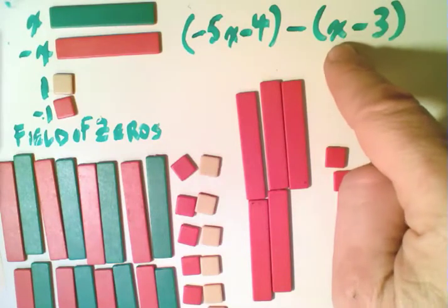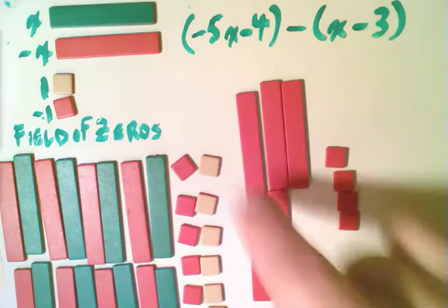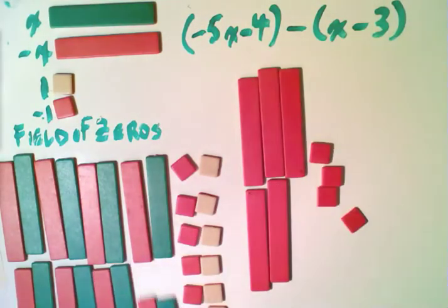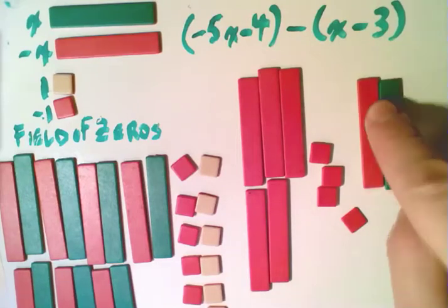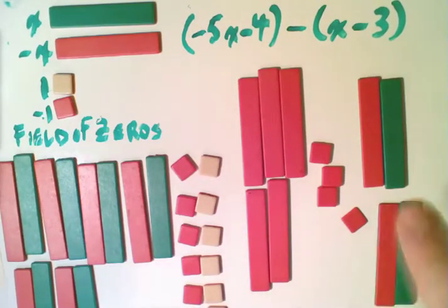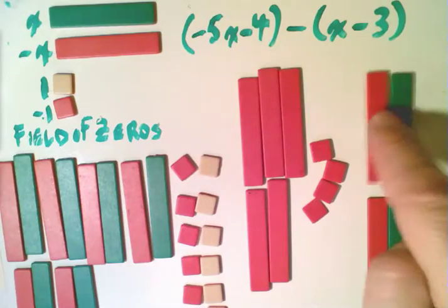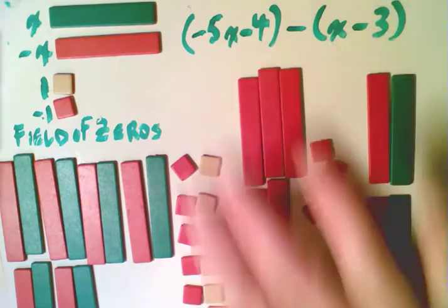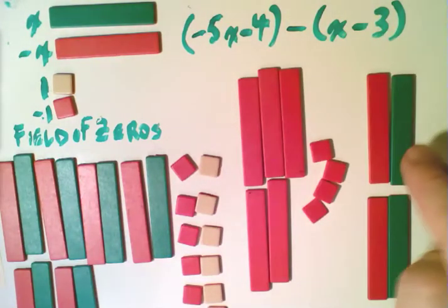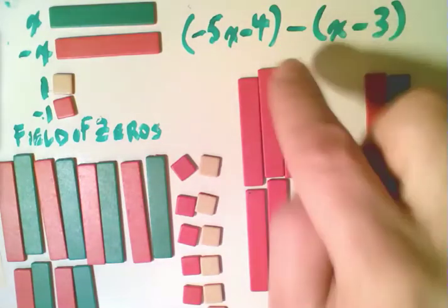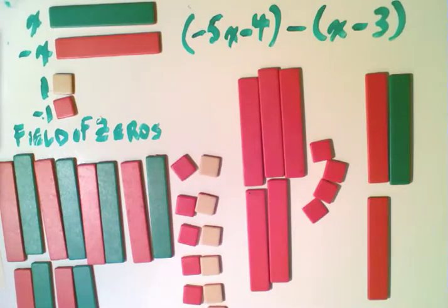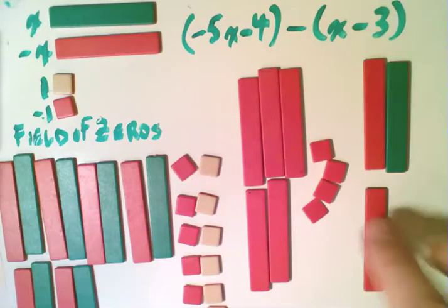But we want to take away x, and we have no x tiles here. And so that is where our field of zeros is going to come into play. We can actually bring in a zero here. We can bring in another zero if we want. We can bring in as many zeros as we wish, because this is negative x plus x that's zero, negative x plus x that's zero. So that doesn't change the value of anything. But because we want to subtract an x, we now have an x that we can subtract. So I'm going to actually take this guy and get rid of it. And so we have subtracted that x from what we have.